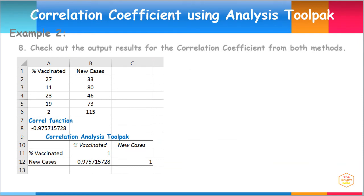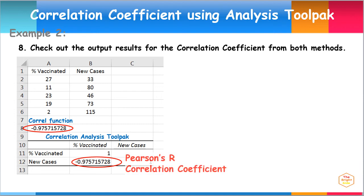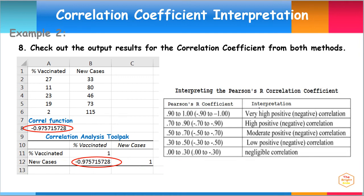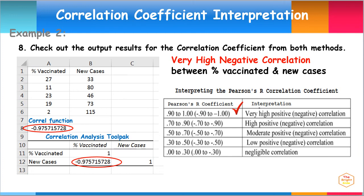Check out the output result for the correlation coefficient from both methods. Both methods gave the same correlation coefficient of negative 0.975715728. This is the Pearson's R correlation coefficient. Comparing this result from the table of interpreting the Pearson's R correlation coefficient, the coefficient falls within the range negative 0.90 to negative 1.00. Thus, the interpretation is very high negative correlation. Therefore, we can conclude that there is a very high negative correlation between percent residents vaccinated and new cases of viral infection.